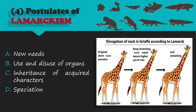Lamarck believed that evolution was driven by acquired traits of a species inherited by its offspring. His theory held that if an organism continually used a structure to carry out a certain task, that structure would become physically modified over time to make the task easier, and this modified structure would then be passed on to offspring. For example, if a short-necked giraffe was continually stretching its neck to reach leaves high in trees, its neck would grow longer over time and its offspring would be born with a longer neck. He also believed that unused body parts, such as the human appendix, would gradually disappear and eventually people would be born without them.